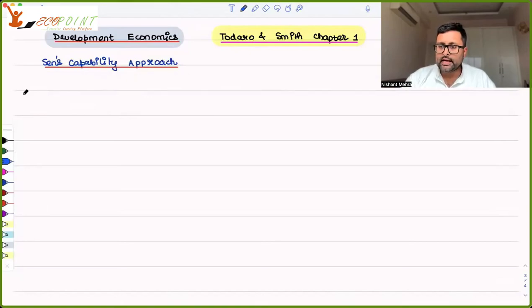Today, let us talk about Sen's Capability Approach. One thing you have to understand is that there is a separate reading on Sen's Capability Approach also in our course, so we'll be doing this in great detail. This is just a part of Chapter 1 of Todaro and Smith, so we have to take it up. Let's discuss what Todaro and Smith has written about it.